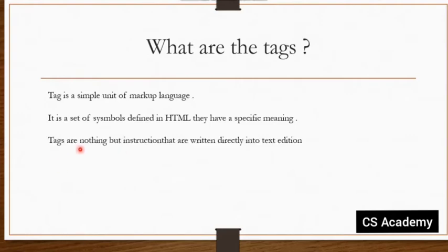Next, tags are nothing but instructions that are written directly into a text editor. For example, a heading tag is an instruction — it tells the browser to perform heading formatting, font size, and so on. Tags are instructions written directly into the text editor, because HTML is a text-oriented programming language.